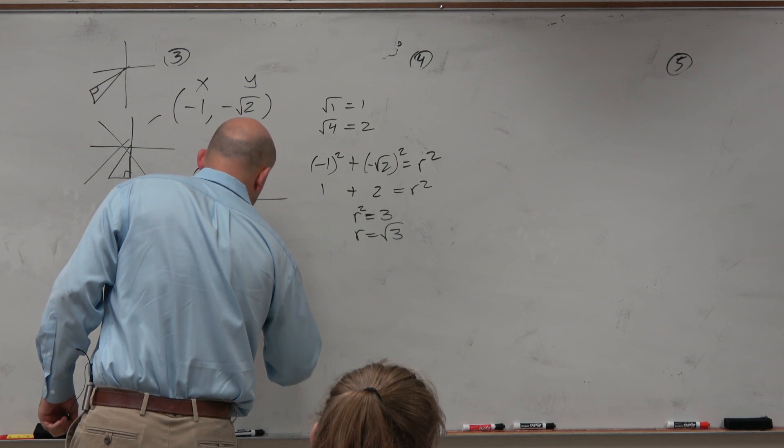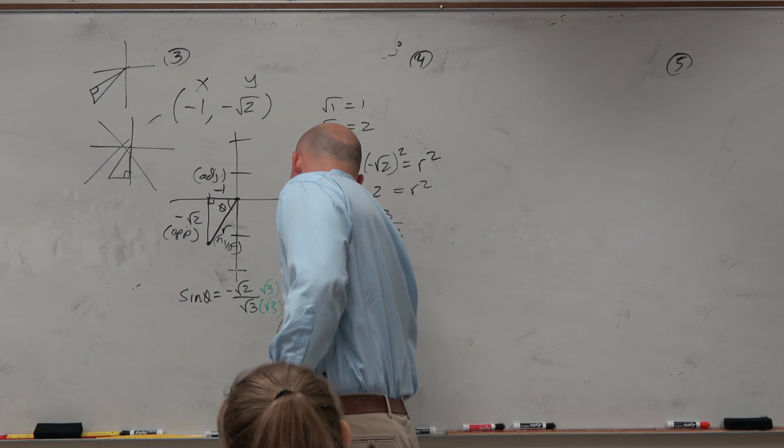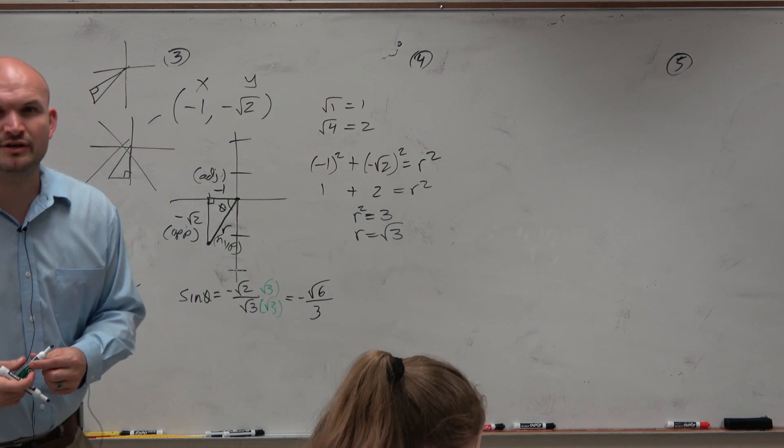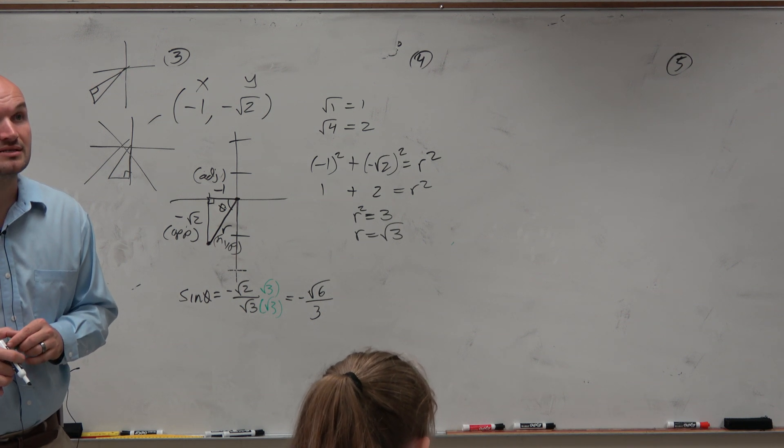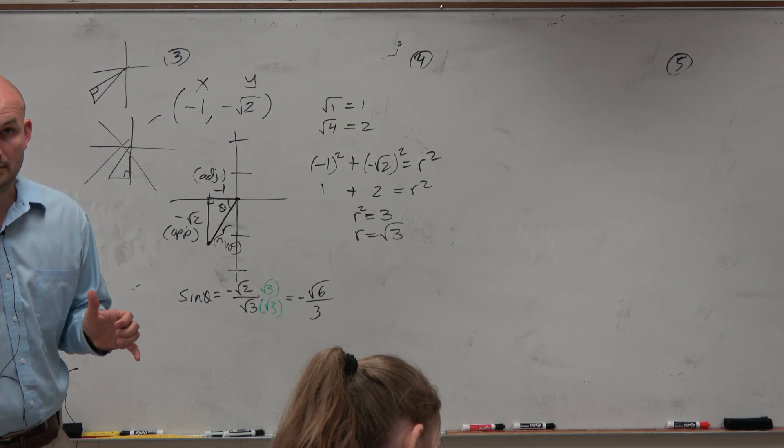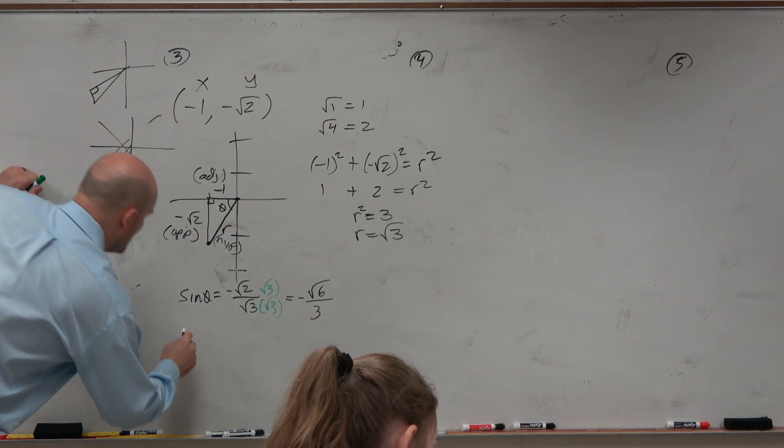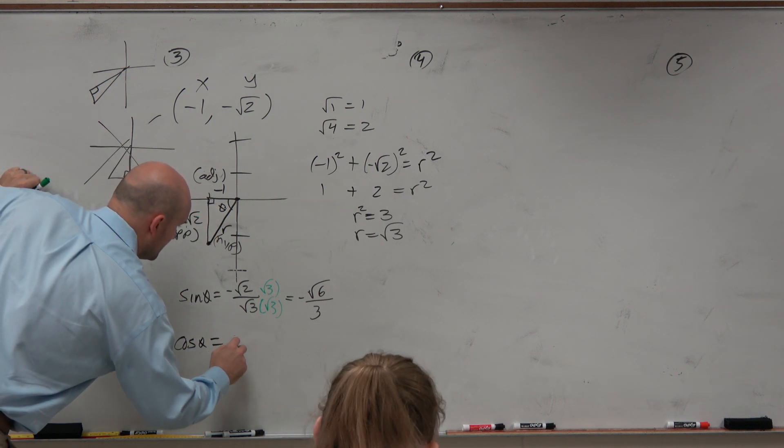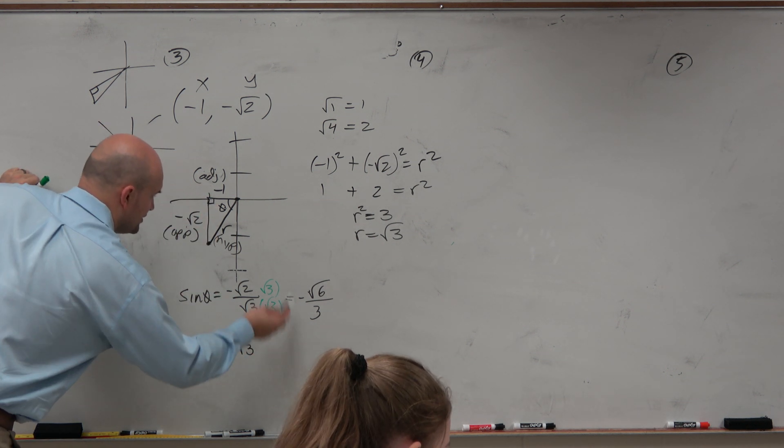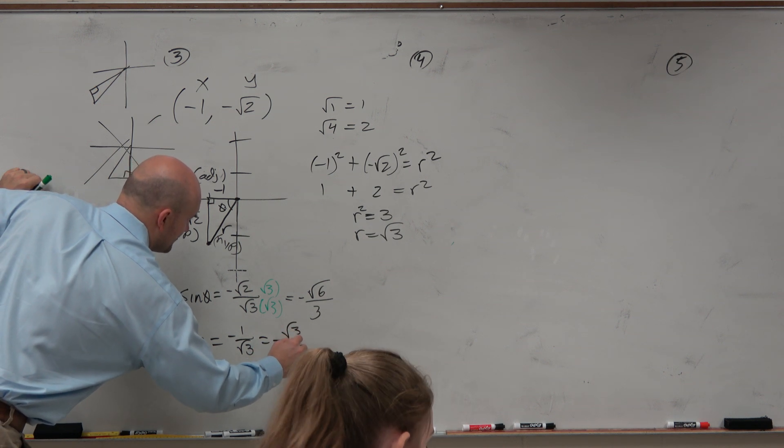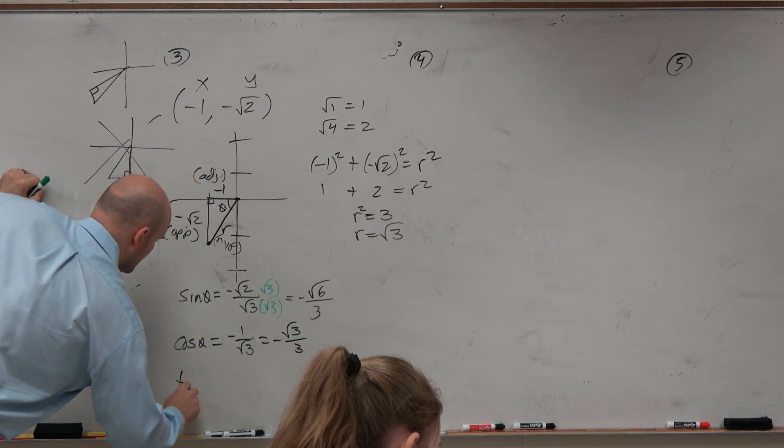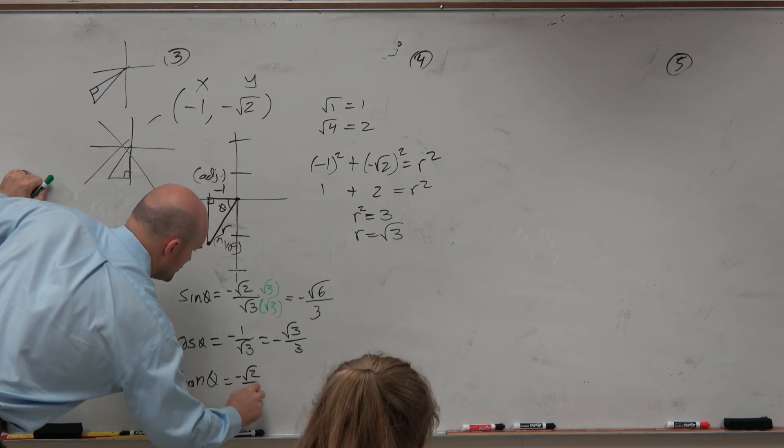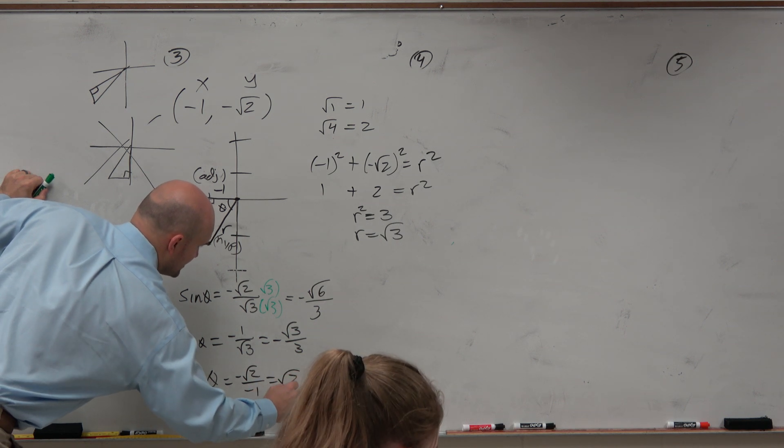I'll show my work here once. And then I will not do my work for the rest of them. So this would be negative square root of 6 over 3. Anybody have any questions on the rationalizing or how I came up with that? We're good? Because we're just going to do the same thing over and over. So cosine of theta is going to be adjacent over hypotenuse. When you rationalize the denominator, you get negative square root of 3 over 3. And the tangent of theta is going to be opposite over adjacent. Negative square root of 2 over negative 1 is equal to a positive square root of 2.